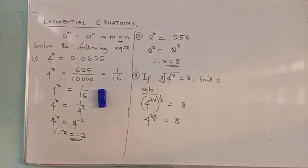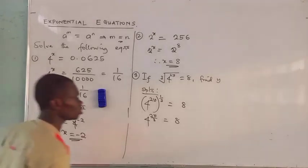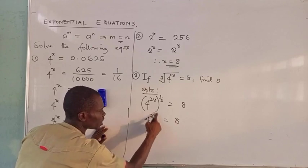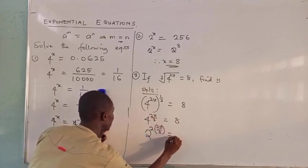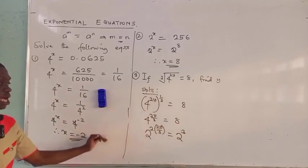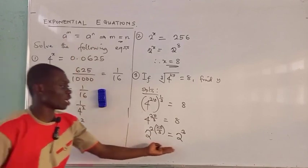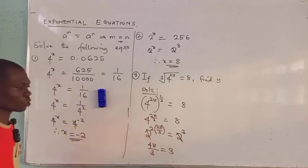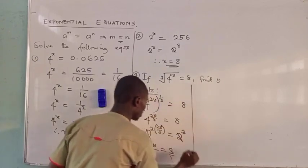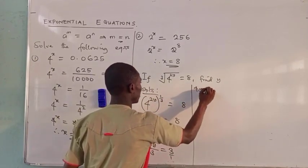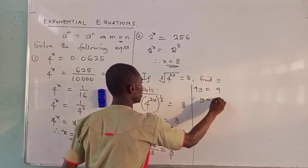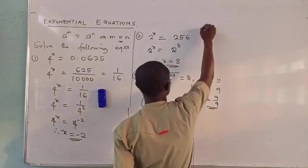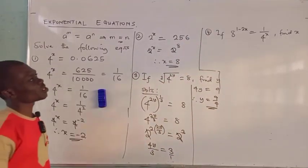We reduce everything to base 2. So 4 becomes 2 squared, and with the existing power 2y over 3, we get 2 raised to power 4y over 3, and 8 equals 2 raised to power 3. The equal bases allow us to equate the powers: 4y over 3 equals 3. Cross-multiplying gives 4y equals 9, therefore y equals 9 over 4.